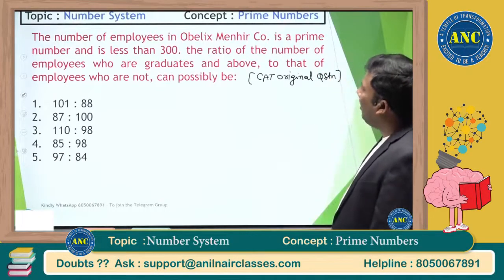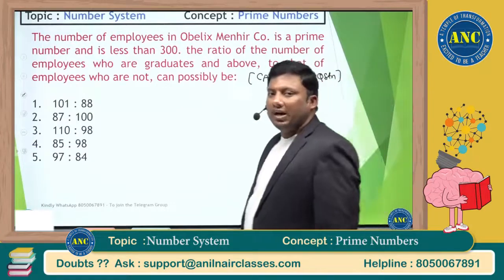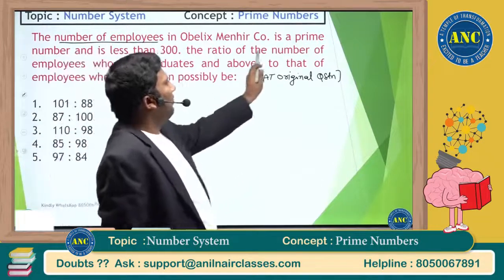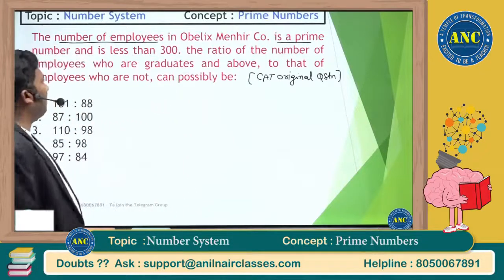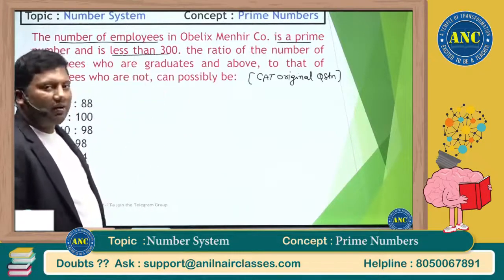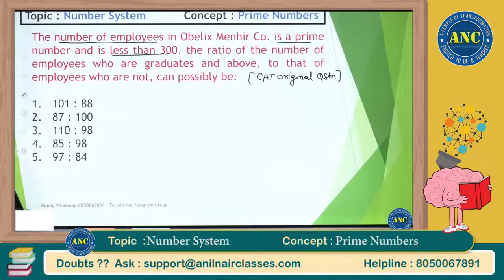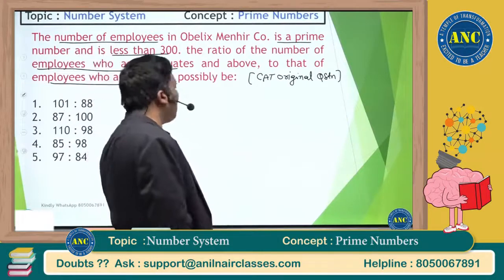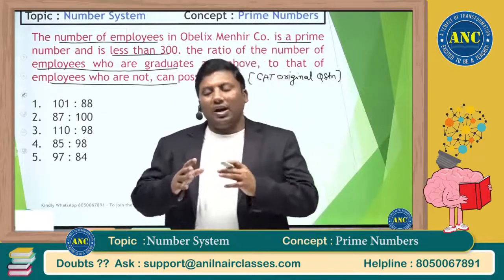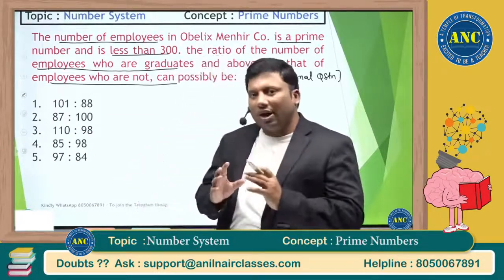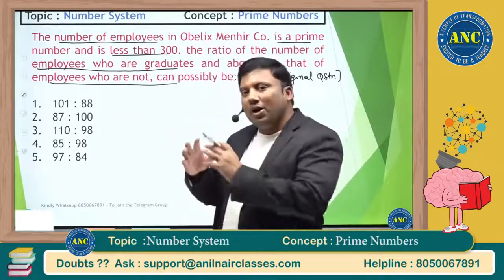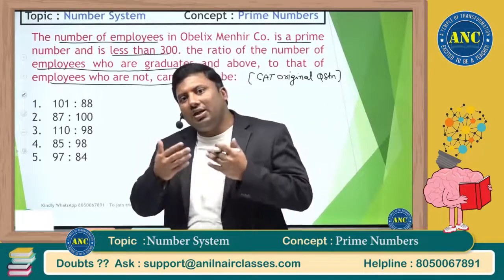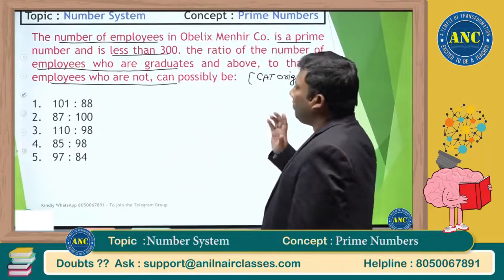CAT original question: the number of employees in a company called Oblix Menhir is a prime number less than 300. Employees are of two types: graduates and non-graduates. The sum of both groups must be a prime number.